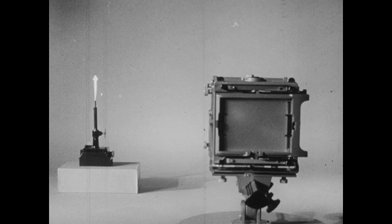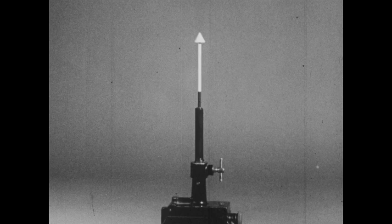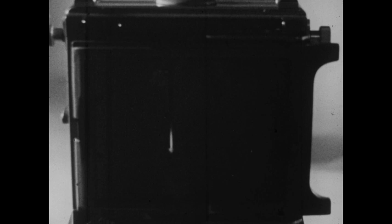For example, we point the camera at an object, an arrow symbol. This arrow can represent any object emitting light or reflecting light. Light from the object enters the camera through its lens, which forms an image, a pattern of the lighted object on the ground glass.